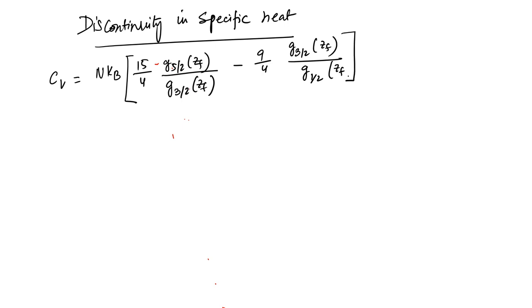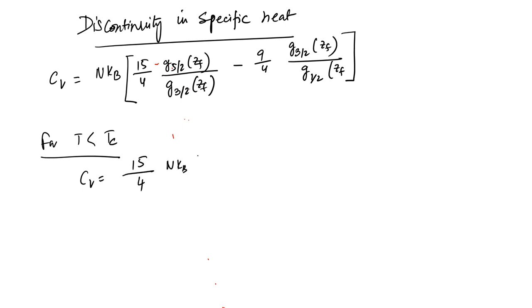This is the complete expression for the specific heat, valid at large temperatures as well as below Tc. At Tc, the behavior of these G functions, or the Bose-Einstein integrals, changes. Between 0 and Tc they are independent of Zf, where Zf is close to 1. At large temperatures they fall off. For T less than Tc, we have Cv equal to (15/4) Nk (T/Tc)^(3/2) times zeta(5/2) over zeta(3/2).